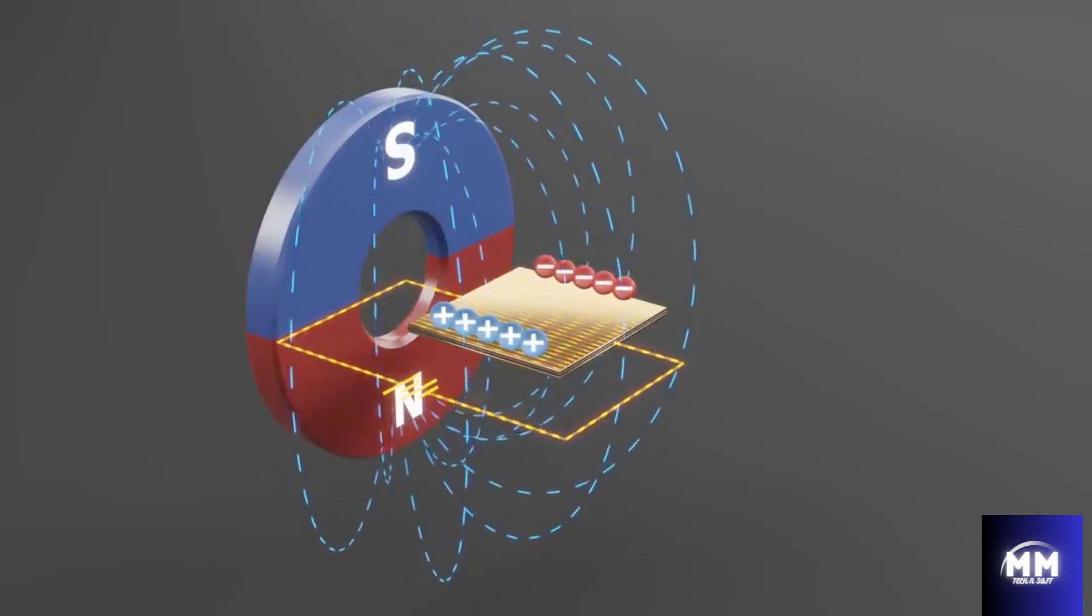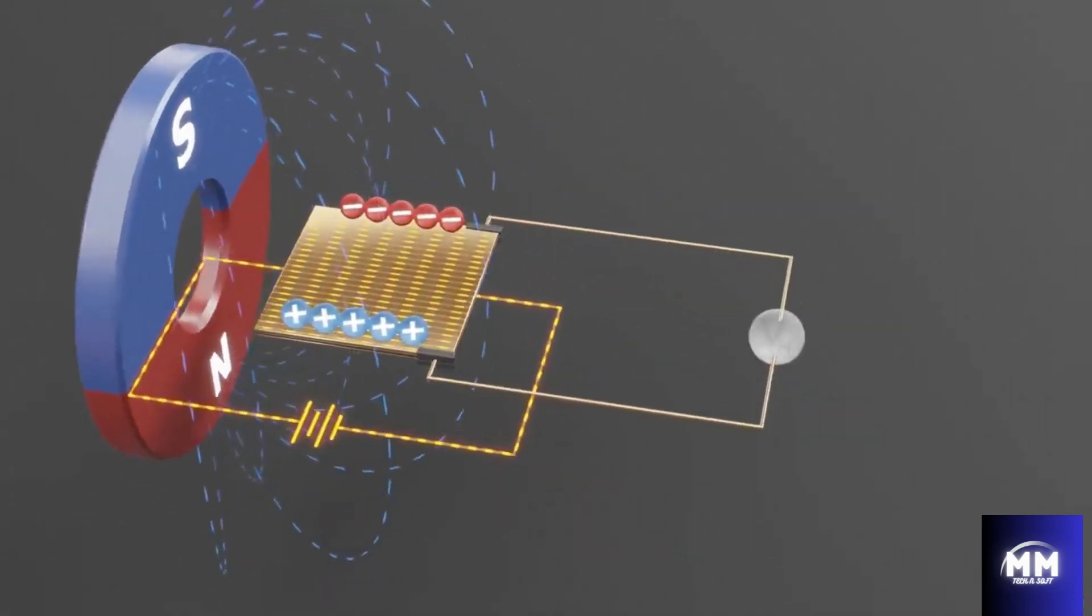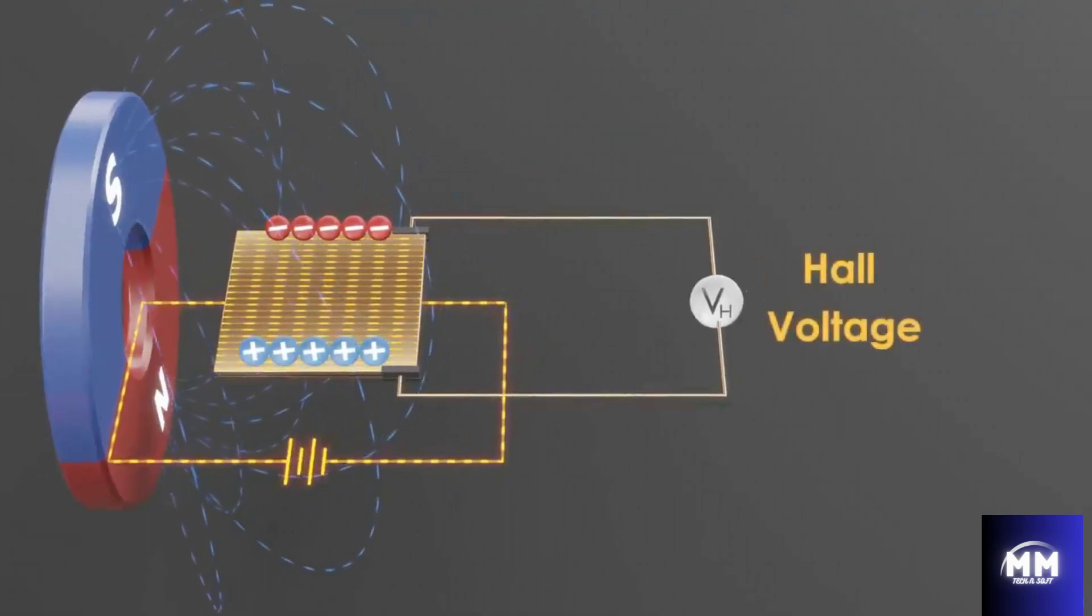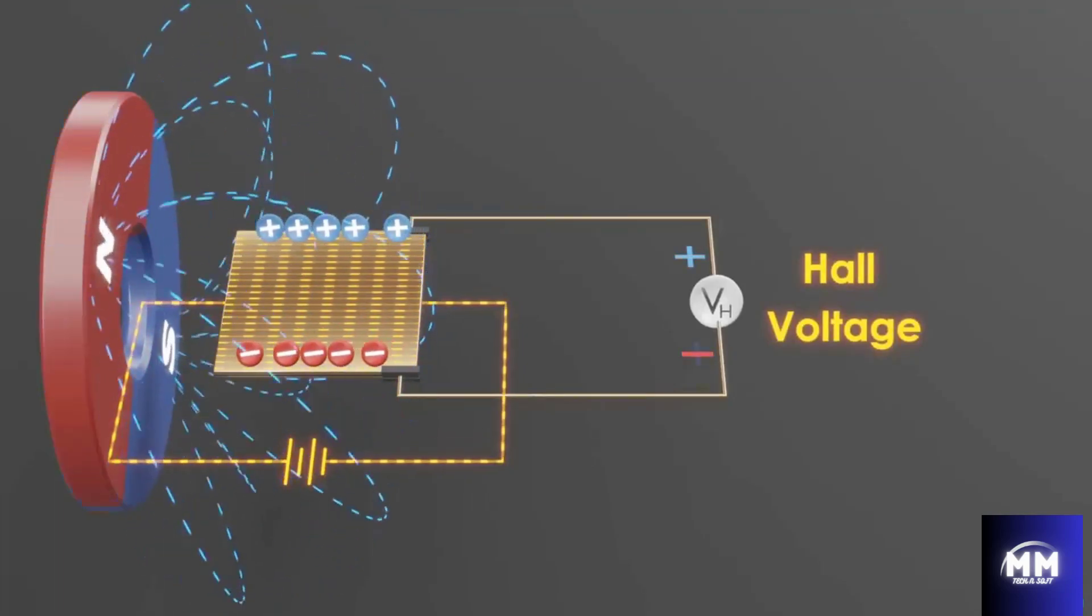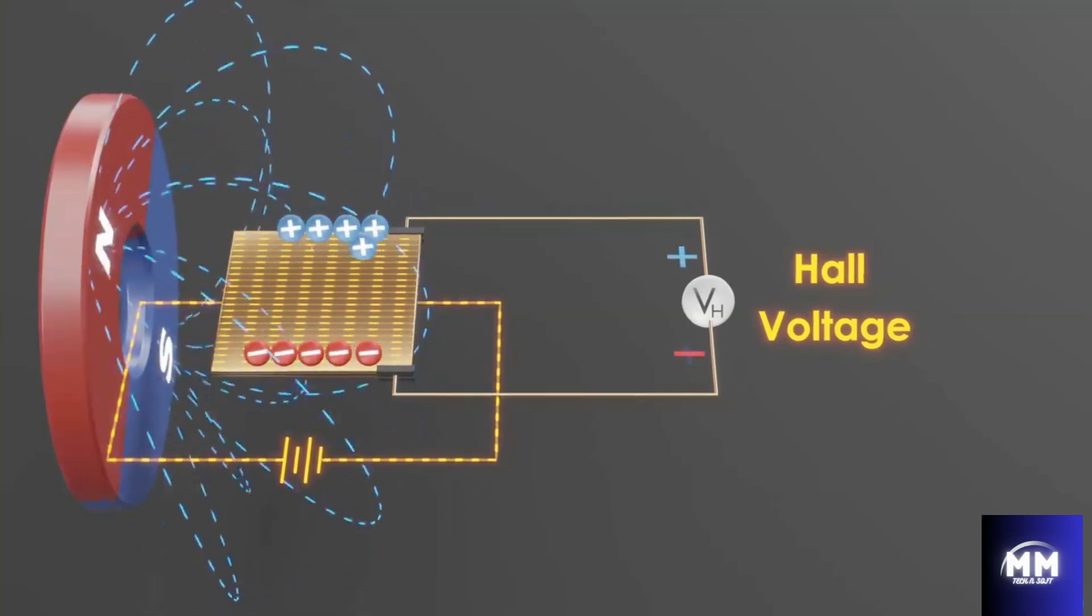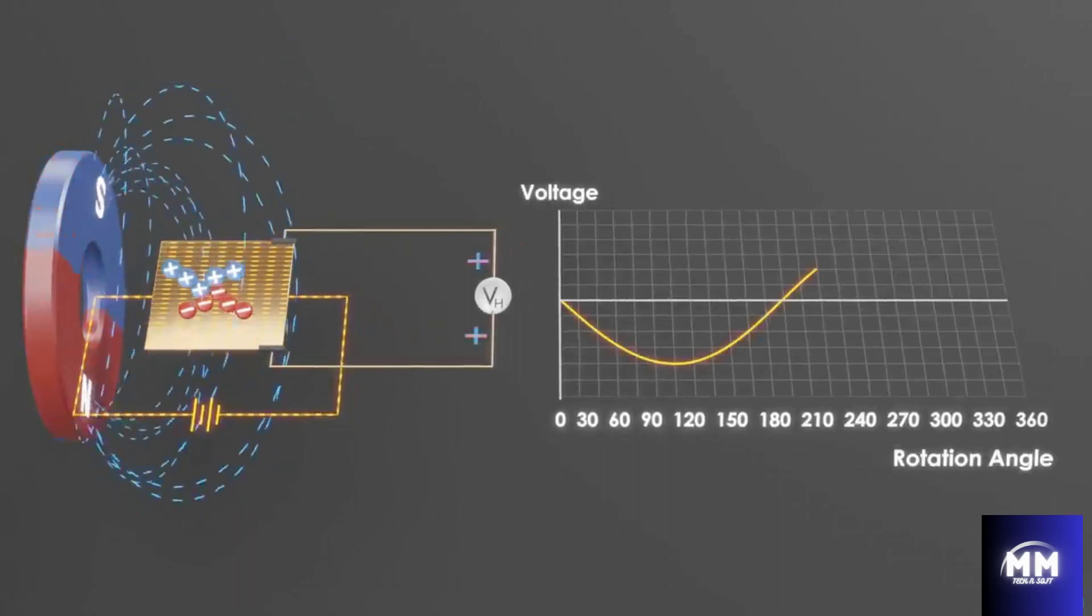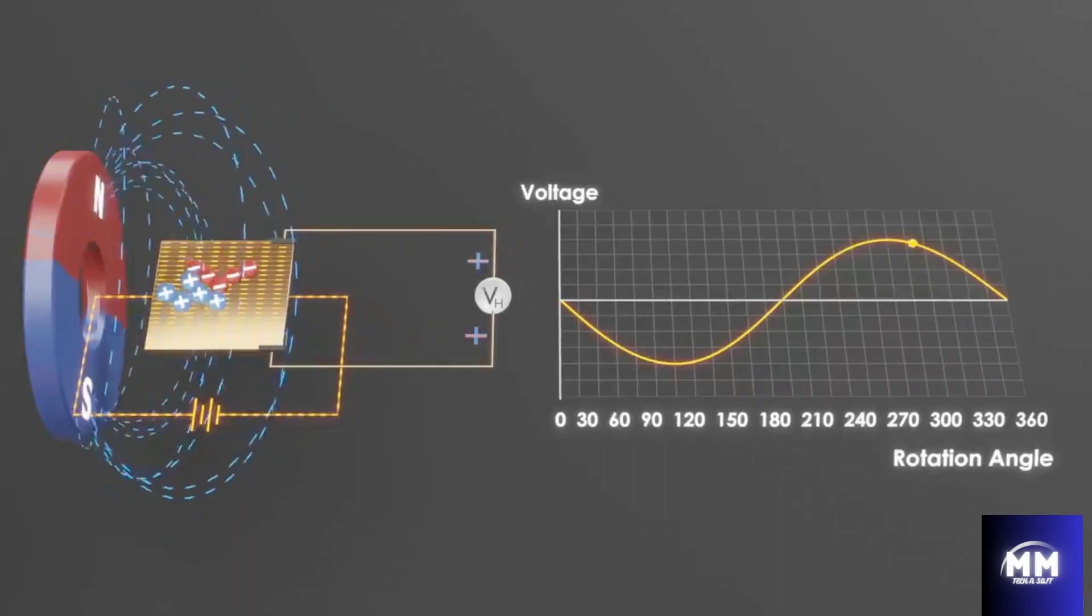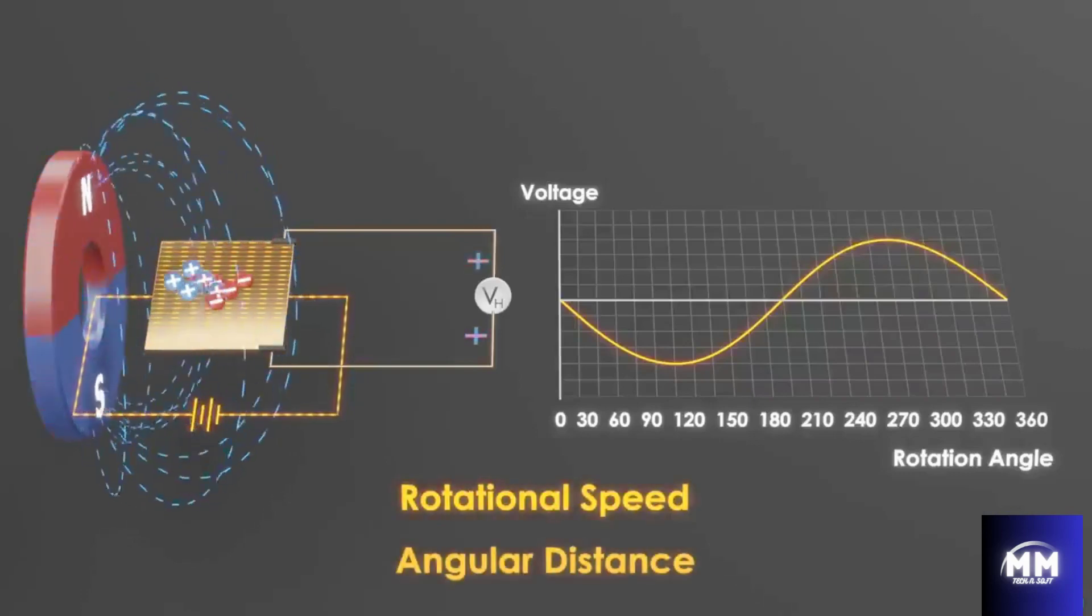With the electrons concentrated at one side of the plate because of the magnetic field, we just need to add a few wires and additional circuitry in order to measure the voltage difference between the top and the bottom of the metal plate. As the magnet rotates, the electrons are pushed to one side of the plate and then the other, and the voltage flips from positive to negative and back again in a sinusoidal shape. This swing in voltage is then used to determine rotational speed and angular distance traveled.